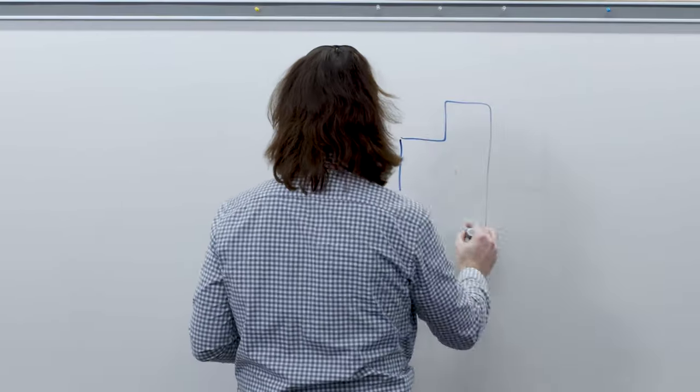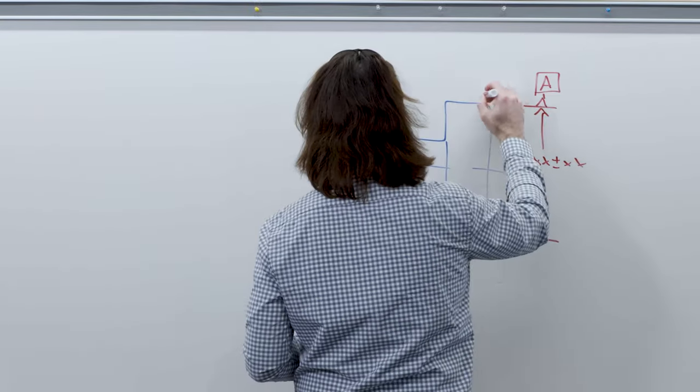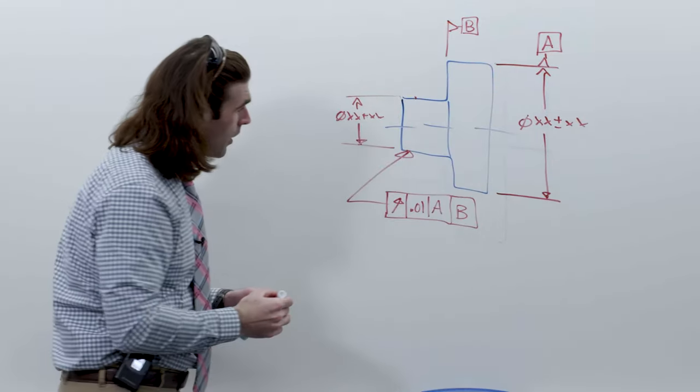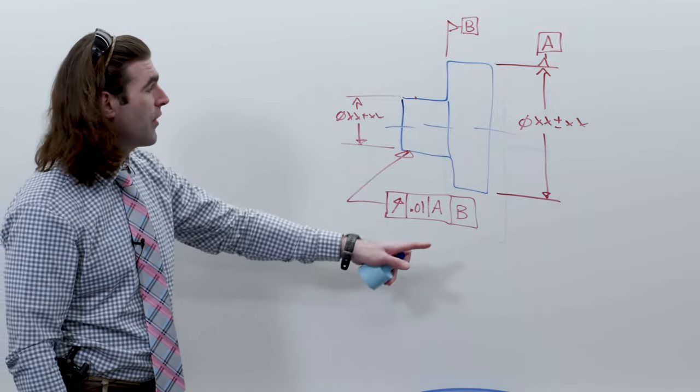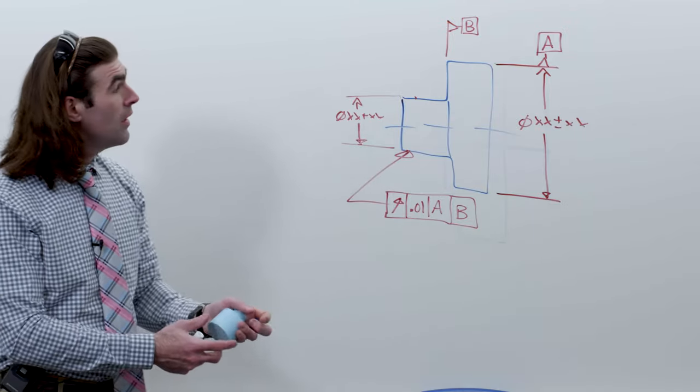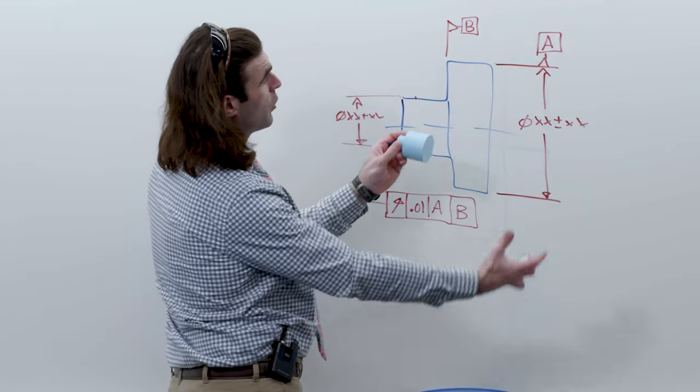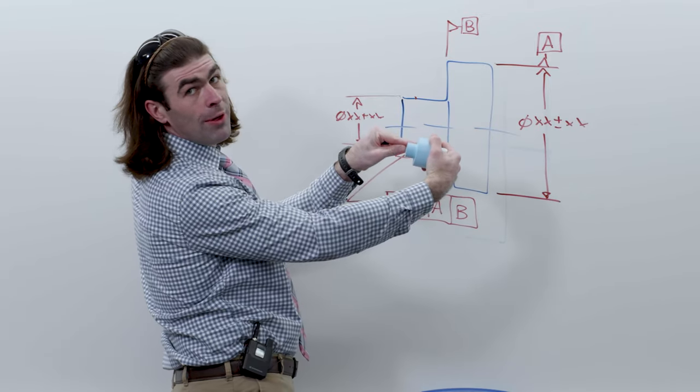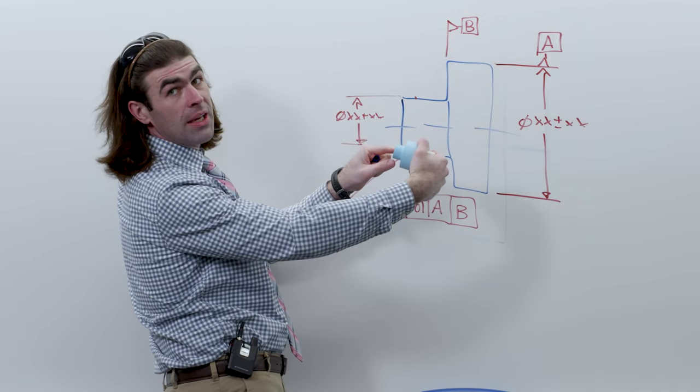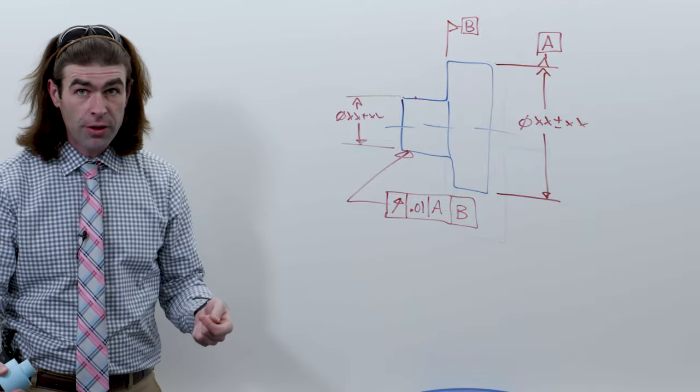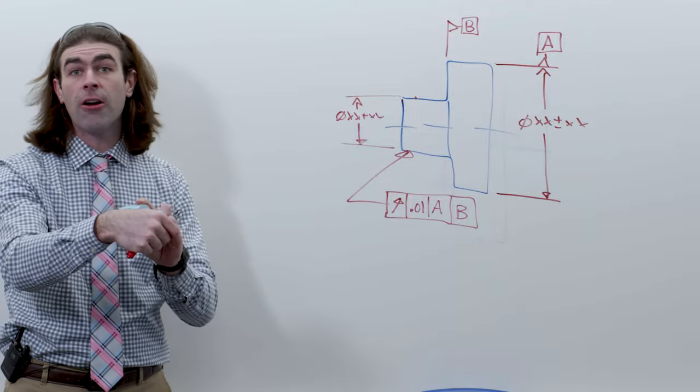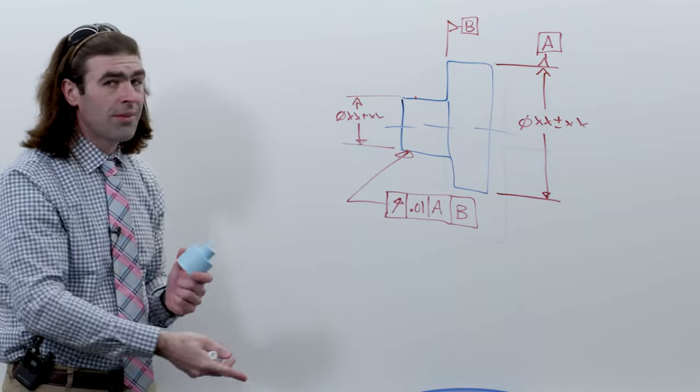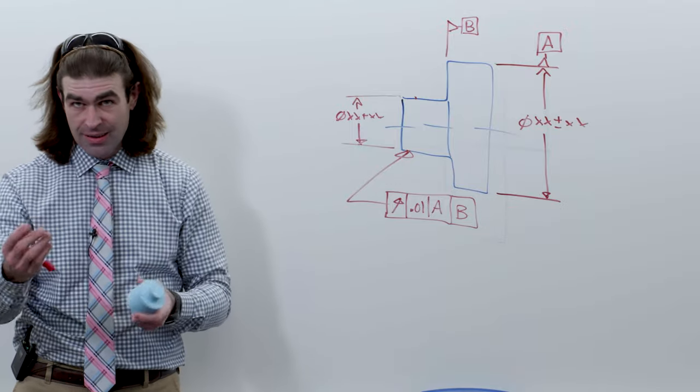Now what you'll see on drawings occasionally is where you have two datums but it's not a compound or multiple datum. You've got datum A primary, B secondary. So the idea is you would grab the part here and then you'd have to make one point of contact on datum B. In my opinion, this is superfluous because when you're doing a runout check, translation doesn't matter at all. So in this case, datum B really isn't very necessary.